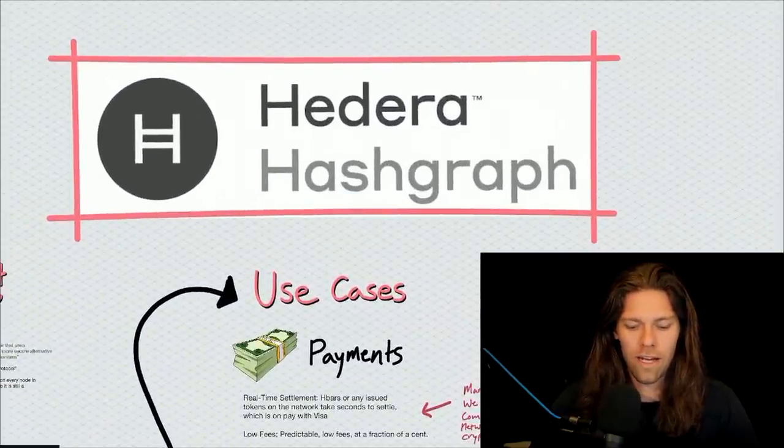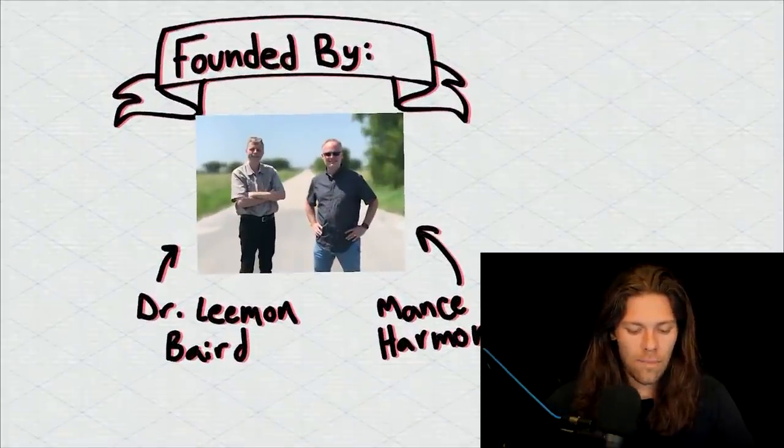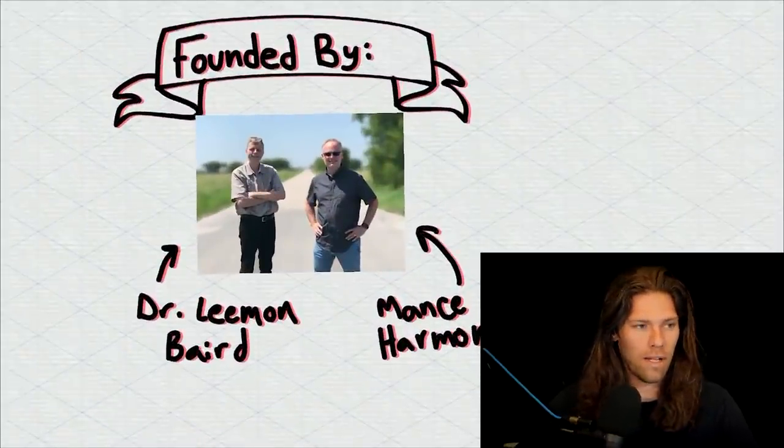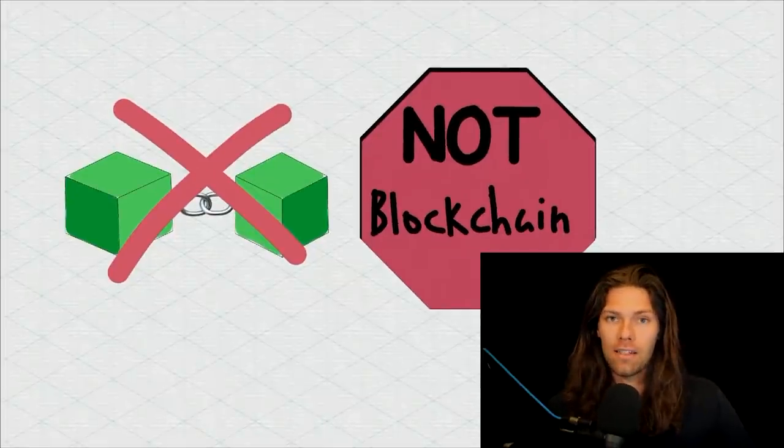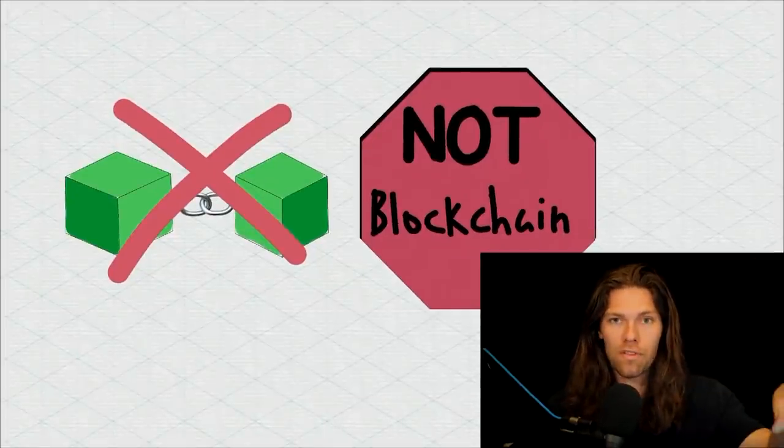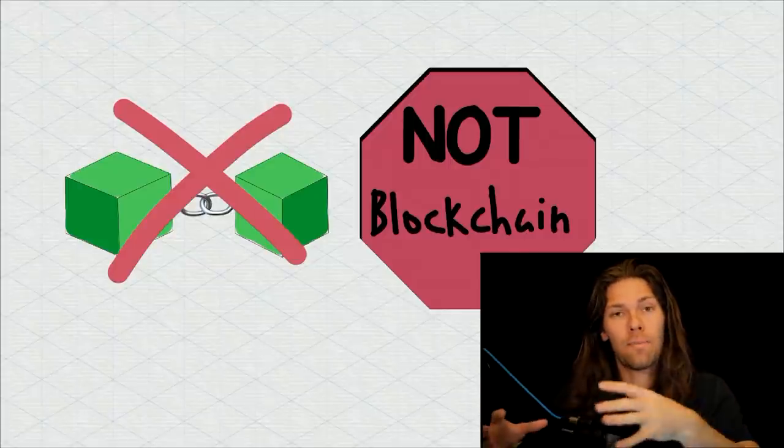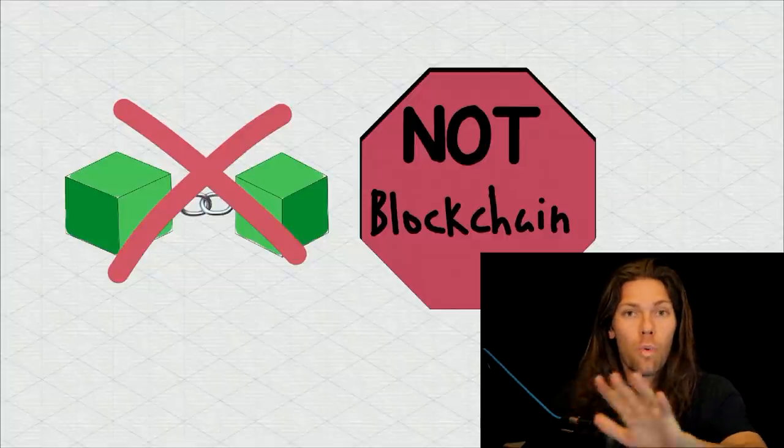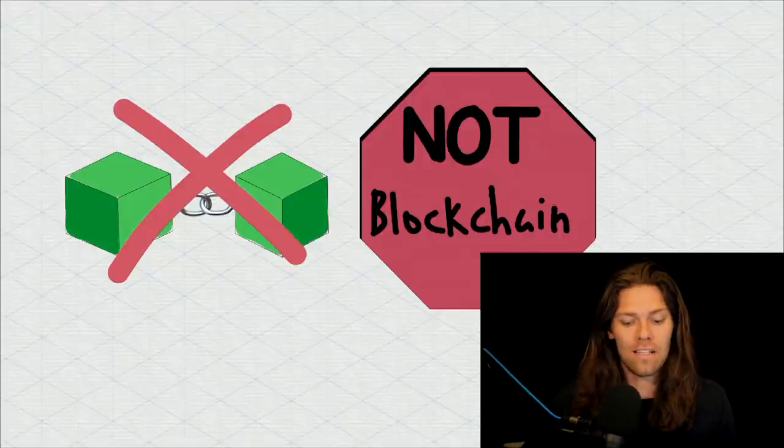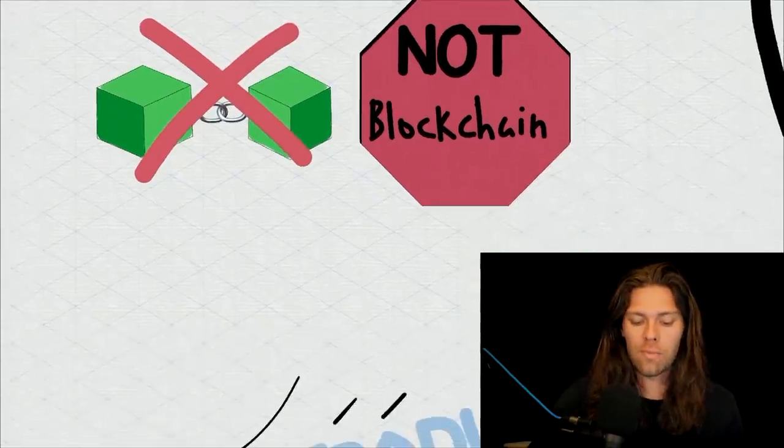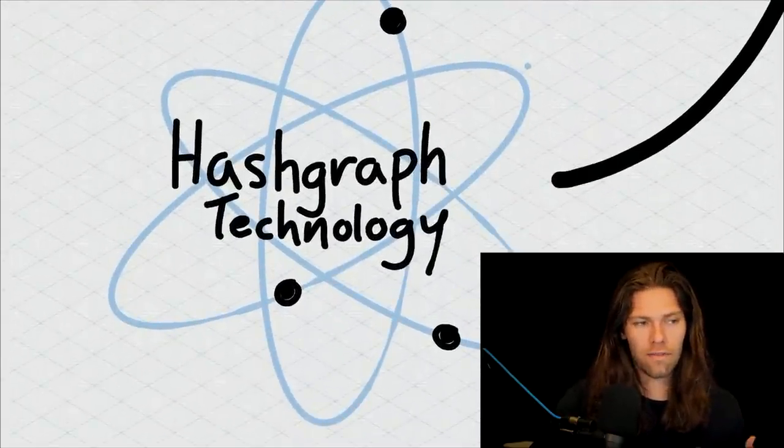Kind of a mouthful of a title, but it's a very interesting project. Founded by Dr. Lehman Bard and Mance Harmon. Starting with what this is not, it actually is not a blockchain consensus mechanism. Like I said in the intro, they're flipping cryptos on their head and building consensus and having a public ledger in a completely different way that no one else is doing. The Hashgraph technology is completely patented and licensed by HBAR. This is introducing the new technology, Hashgraph technology.